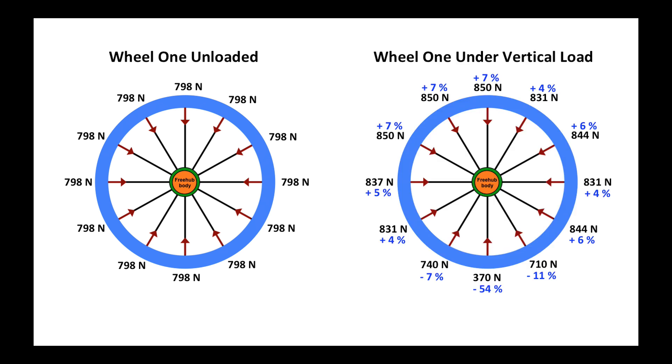Here is a comparison of wheel one unloaded to wheel one loaded. You can see that as the spokes in wheel one come into the bottom of the load bearing zone, there is a huge drop of tension, about a decrease of 54 percent.